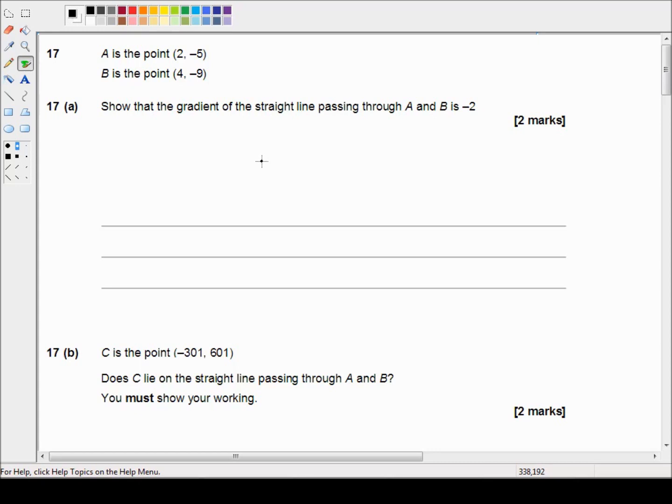This is a non-calculator paper and we're picking up in question 17 which reads: A is the point (2, -5), B is the point (4, -9). Show that the gradient of the straight line passing through A and B is -2. Okay so we're actually told the answer, we just need to show that that's the correct answer.